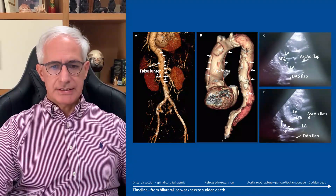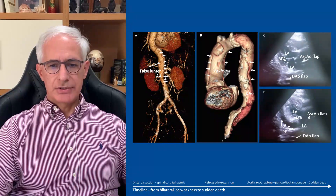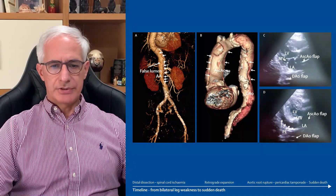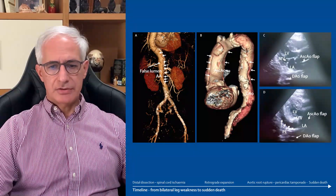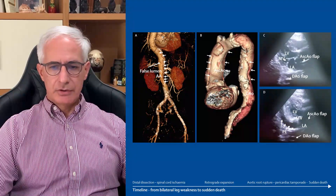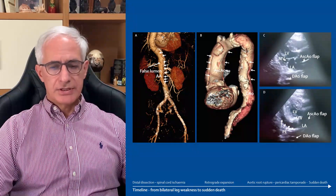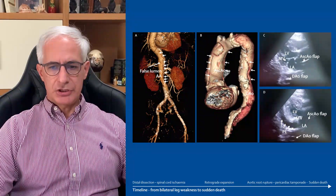Contrast CT to examine for traumatic injuries revealed an extensive Stanford type A aortic dissection. Panel A shows the dissection flap in the abdominal aorta, with posterior location of the false lumen causing spinal cord ischemia, hence lower limb weakness and paresthesia.